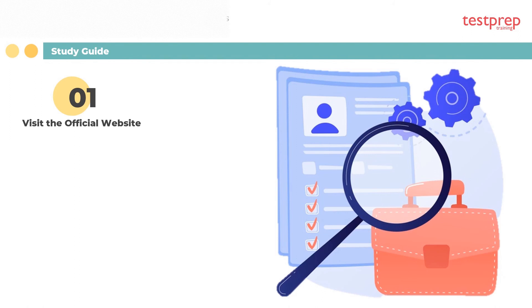Now let's discuss the preparatory guide. One, visit the official website — visiting the ICC official website is an important step while preparing for the exam. The official website provides a lot of essential information and resources which are very helpful in preparing for the exam. Two, refer to the exam guide — before starting your preparation, it is very important to know the course structure and exam guide for the examination. You should visit the official website to get the course outline and exam guide.